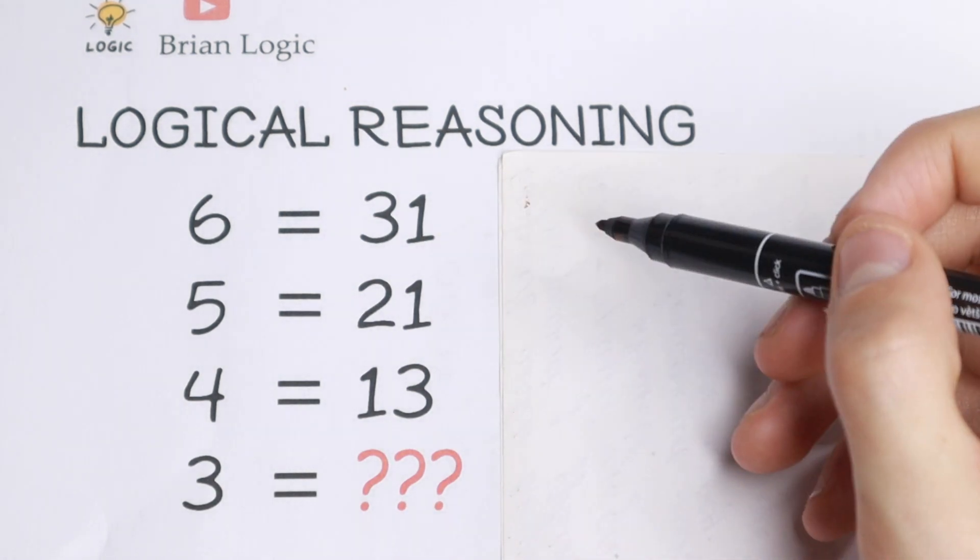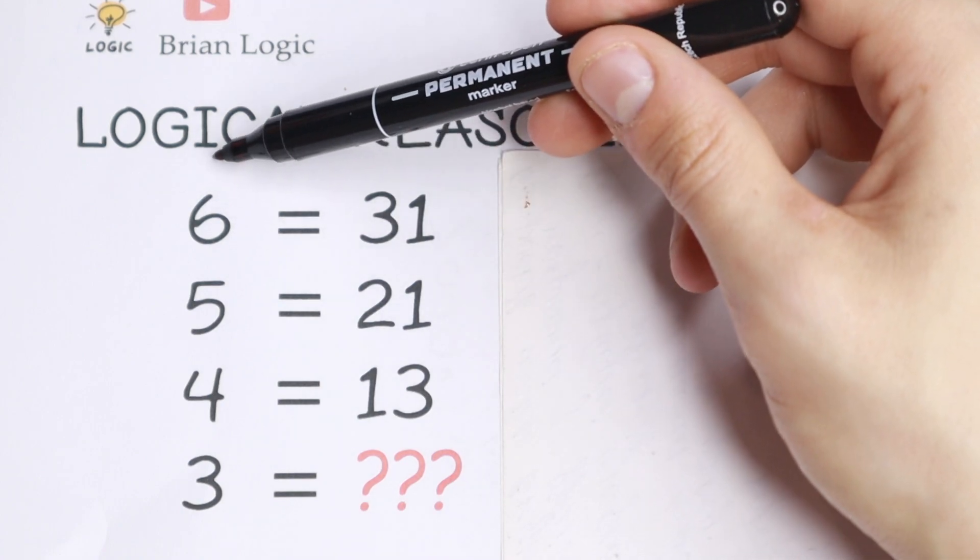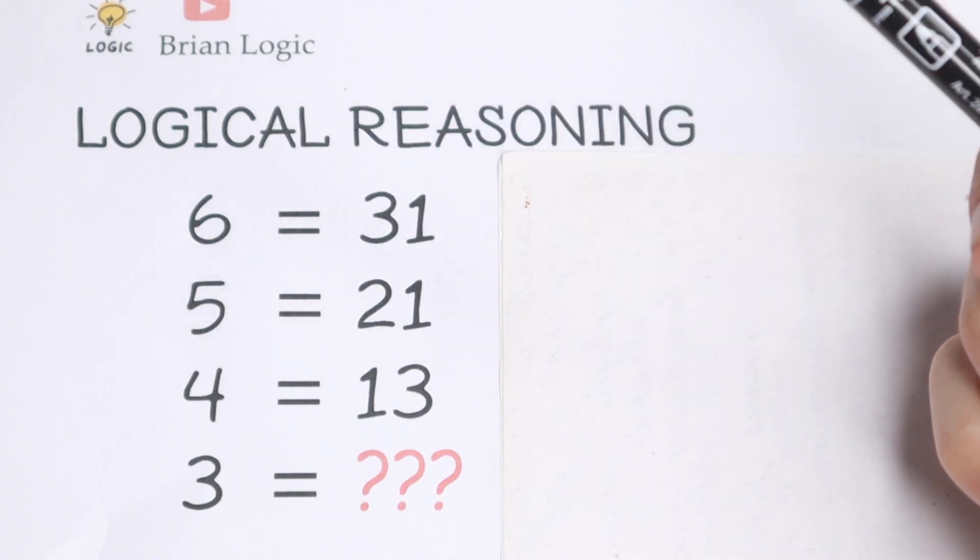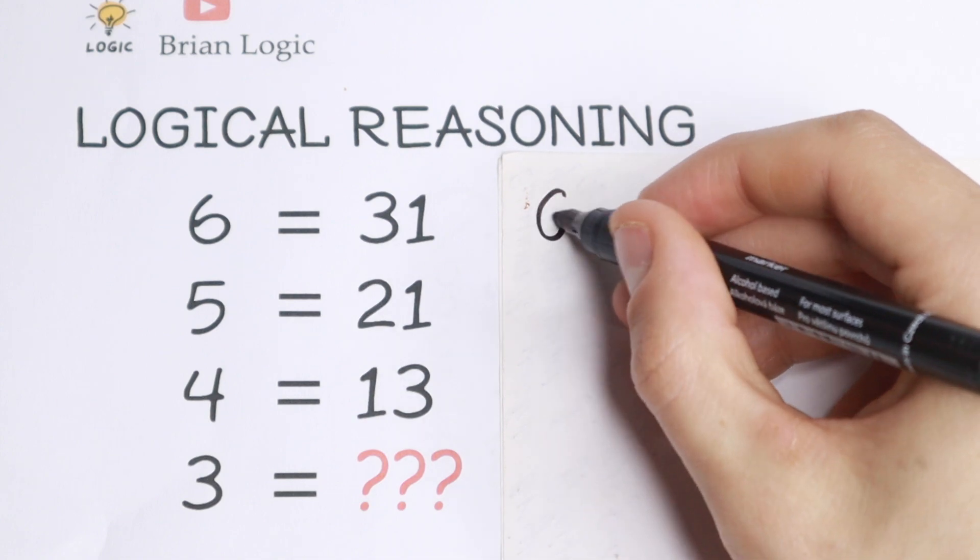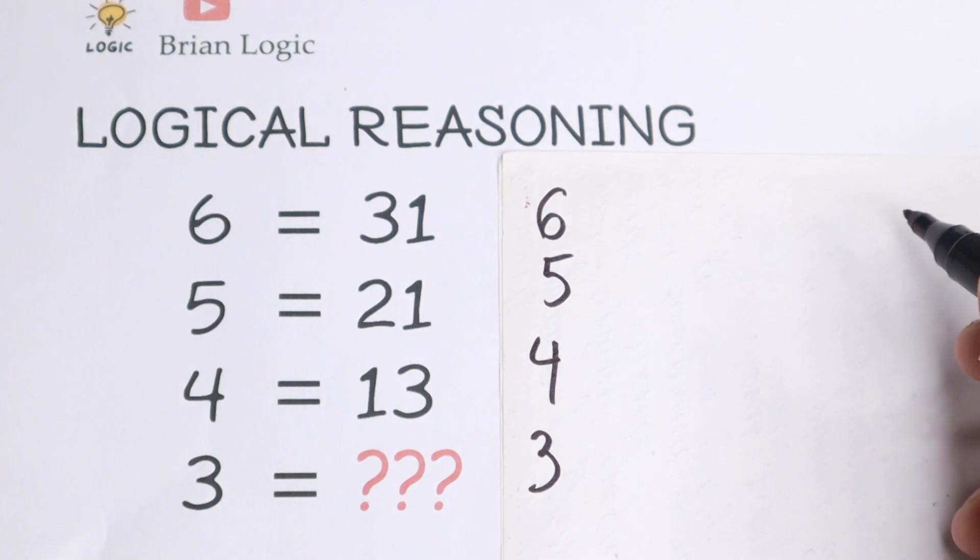So right here we have 31. How can we get 30 or 31? I see on the left hand side we have 6 and 5. So I write these numbers right here: 6, 5, 4, and 3. Take a look.